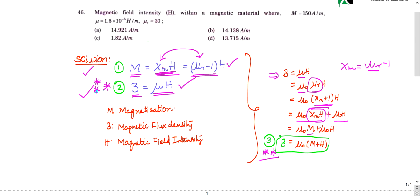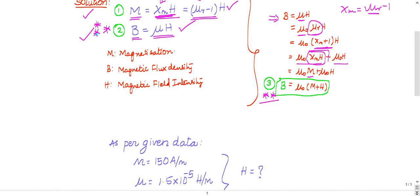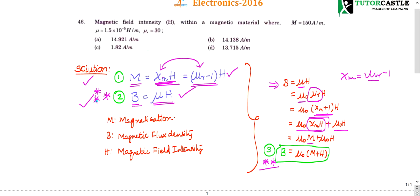So my main intention is to remember formulas one and two perfectly: B equals μH, M equals χₘH, where χₘ is μᵣ minus 1. Fine, now let us see what is given in the question. He has given M, μ, and μᵣ.